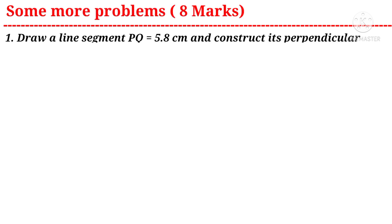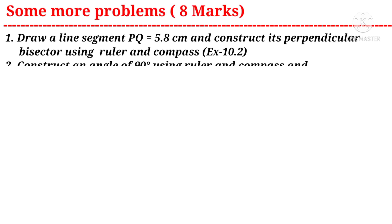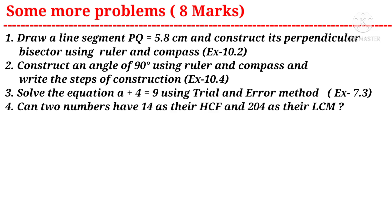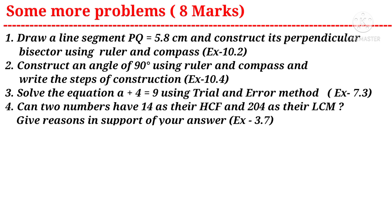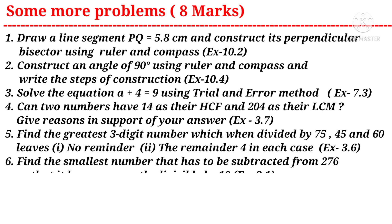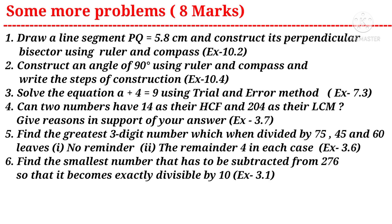Now let us see some eight-mark questions. Question one: draw a line segment PQ = 5.8 cm and construct its perpendicular bisector using ruler and compass — a question from the tenth chapter. Question two: construct an angle of 90 degrees using ruler and compass and write the steps of construction — also from the tenth chapter. Question three: solve the equation a + 4 = 9 using trial and error method — a question from the seventh chapter.